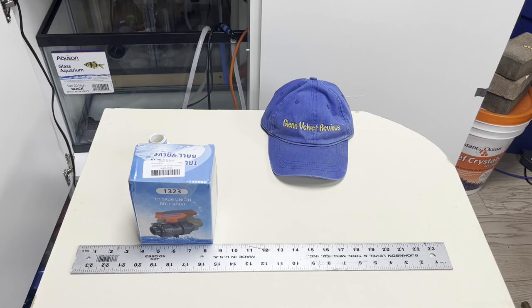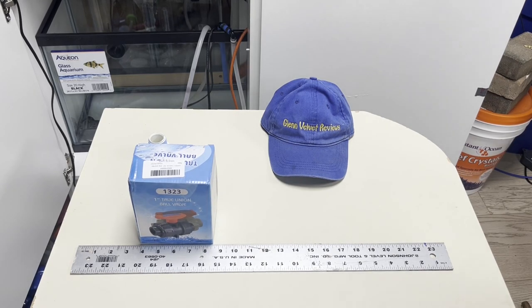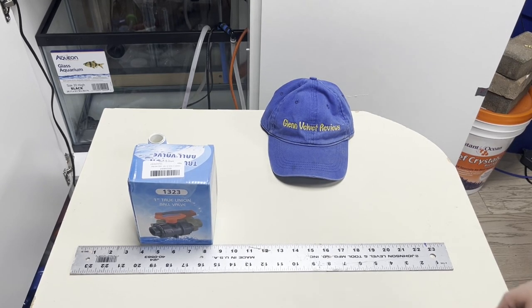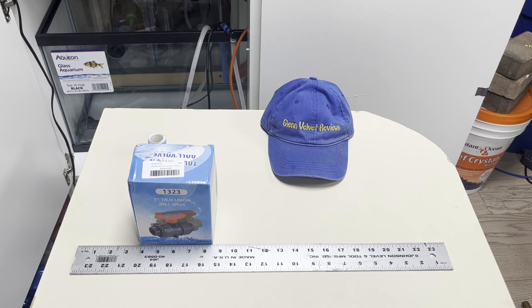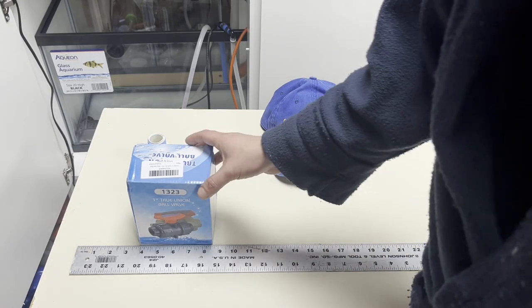Hello everyone, we are back with Glenn Velvet Reviews today, and I got another union valve off of Amazon because I went to my local plumbing supply, GPS Plumbing Supply. They don't sell anything like this. I don't know if it's just the location or whatever, but I couldn't get anything like this.